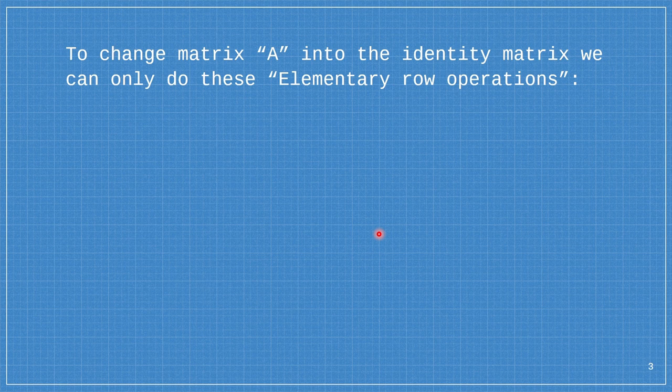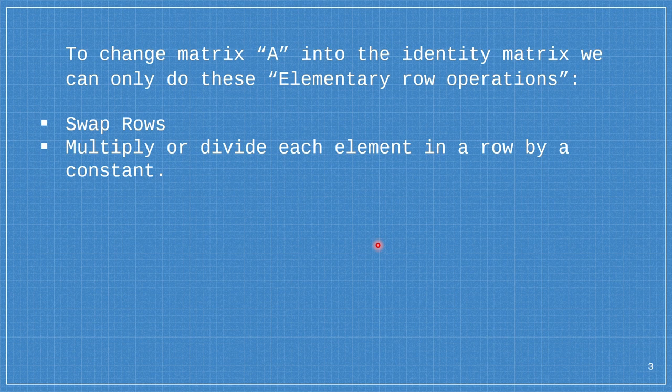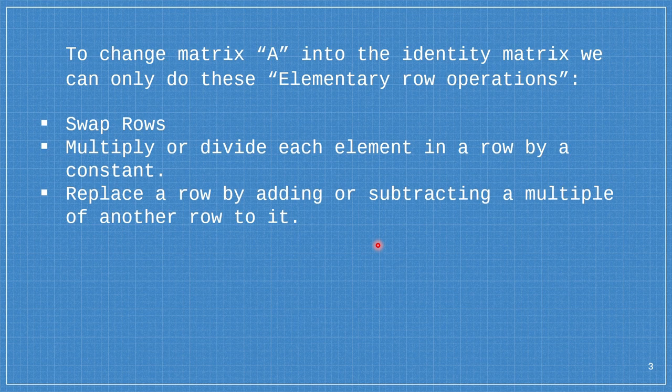To change matrix A into the identity matrix, we can only do elementary row operations. First, we swap rows — we only do this if it is necessary. Next, multiply or divide each element in a row by a constant, and replace the row by adding or subtracting a multiple of another row to it. When doing an elementary row operation, you have to do it to the whole row.